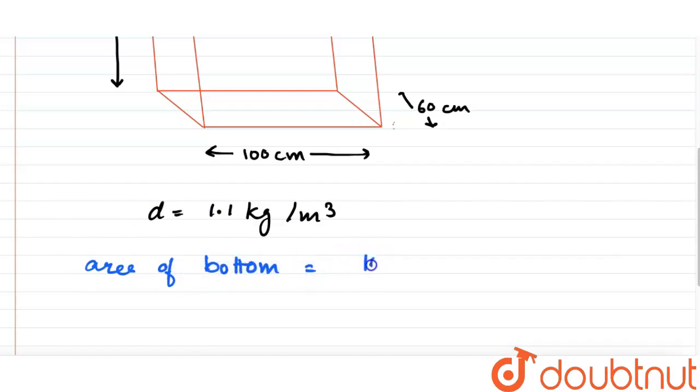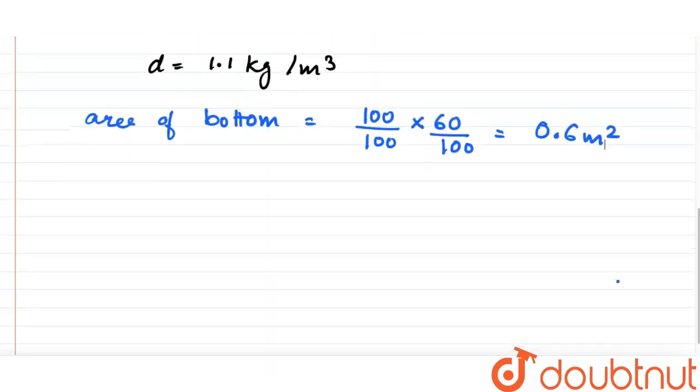is equal to 100/100—we have to convert, we will take standard units and standard unit for length is meter, not centimeter, so we will convert centimeter to meter by dividing it by 100. This will give us an area of 0.6 meter square.